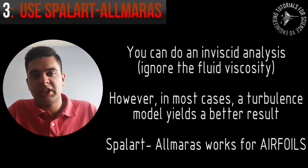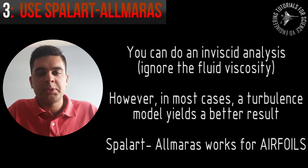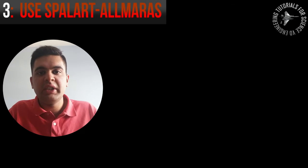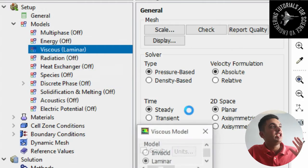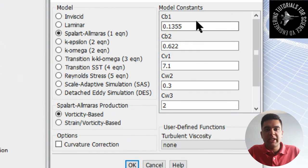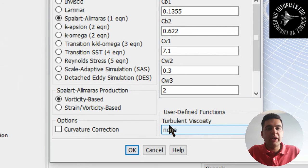For airfoils specifically the one I use is Spalart-Allmaras. Now the Spalart-Allmaras is commonly used for airfoils since you don't need a very highly accurate mesh to get a good result. It does have very good near wall treatments and you can see me doing this quickly here in ANSYS. Most of the publications at NASA they also use Spalart-Allmaras since it's a very reliable model and you can get quite a decent result when it comes to airfoils specifically.